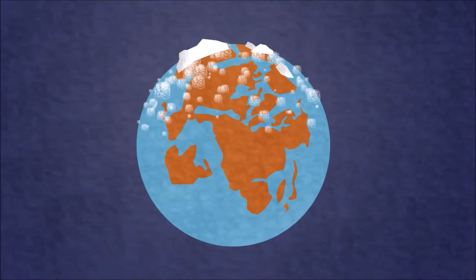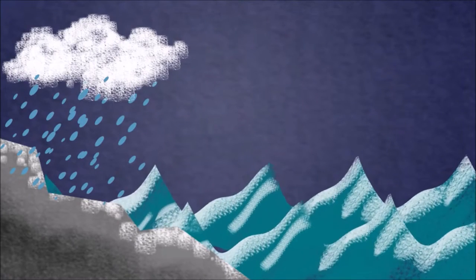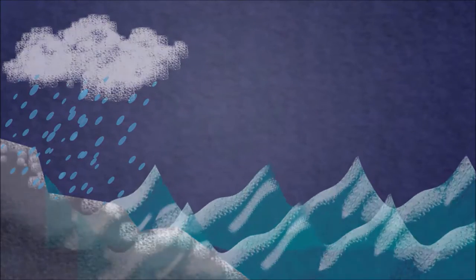As the Earth cooled, the water vapor condensed to form oceans. Over time, the soluble salts in the rocks dissolved in the rain, which flowed to the oceans, making them salty as we know them today.